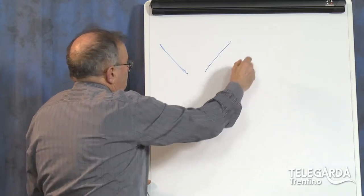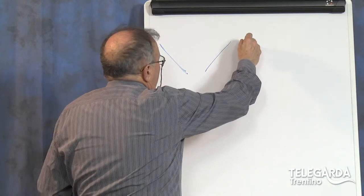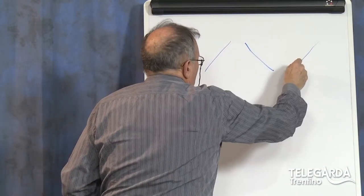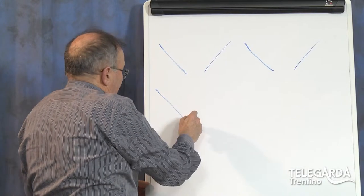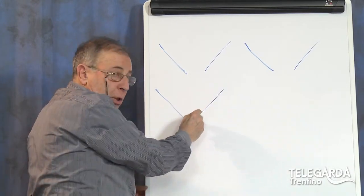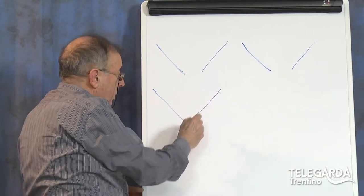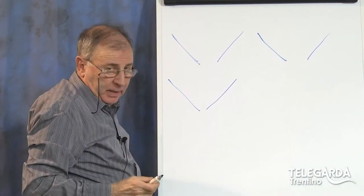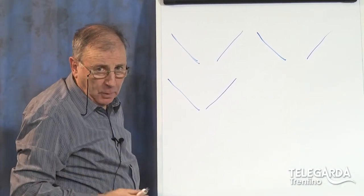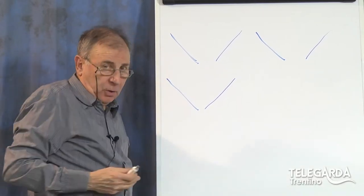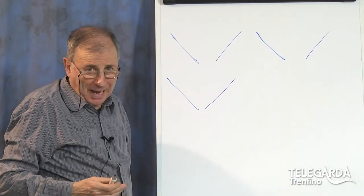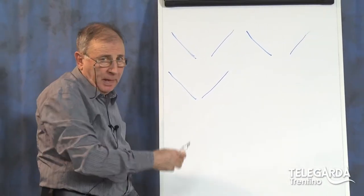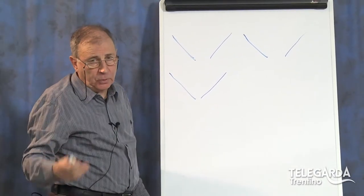Aperto, chiuso, aperto, chiuso, aperto, chiuso. Cari amici telegarde appassionati di dialetto, vedete che mi trovate proprio in una condizione: sto facendo un ripasso degli accenti aperti e degli accenti chiusi, l'accento fonico aperto e l'accento fonico chiuso.